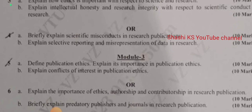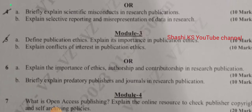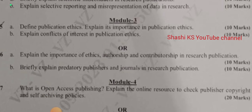The odd choice was: explain the importance of ethics, authorship and contributorship in research publication, briefly explain predatory publishers and journals in research publication. In module 4, the question was: what is open access publishing, explain the online resource to check publisher copyright and self-archiving policies. This question was asked for 20 marks.